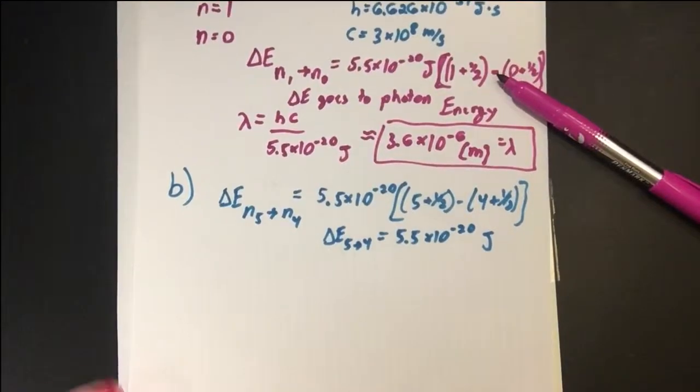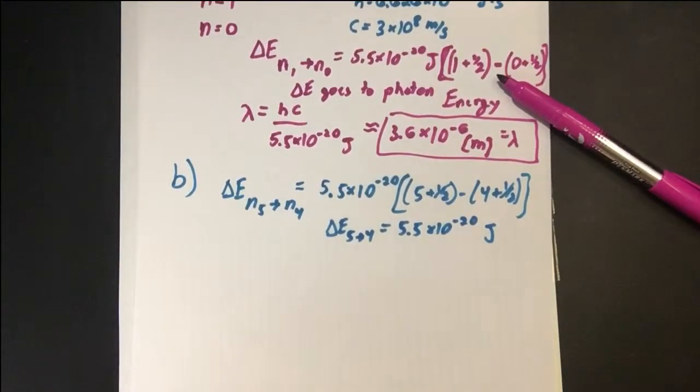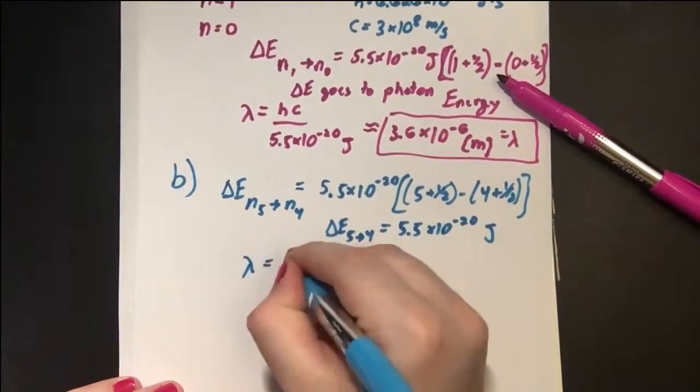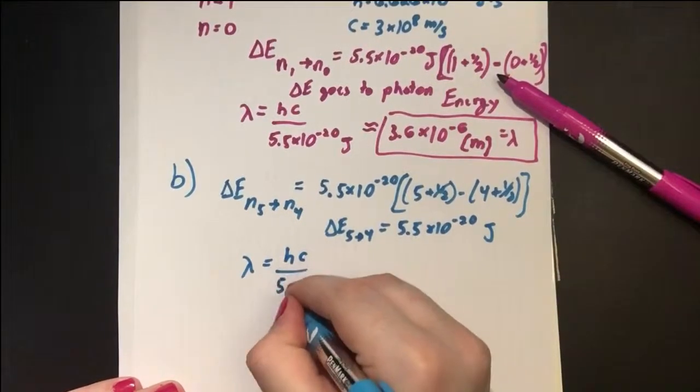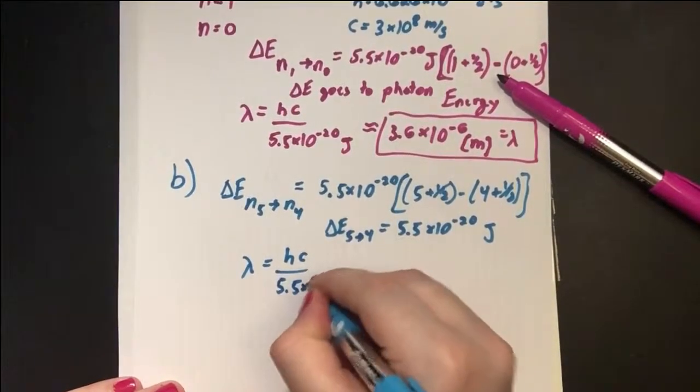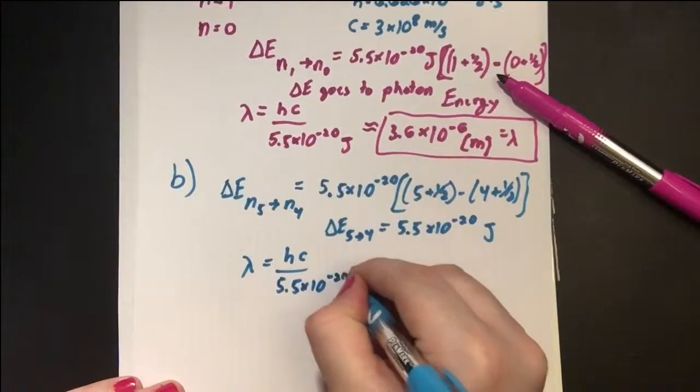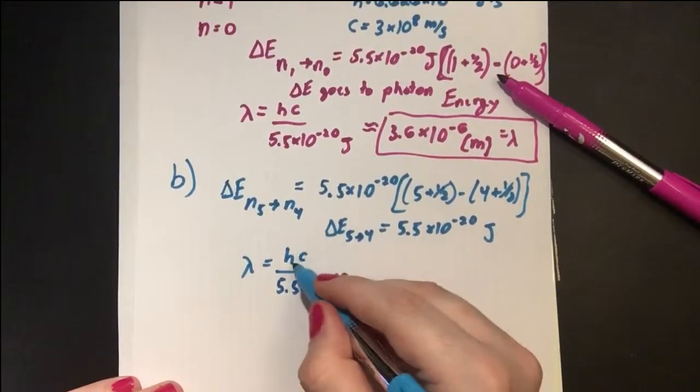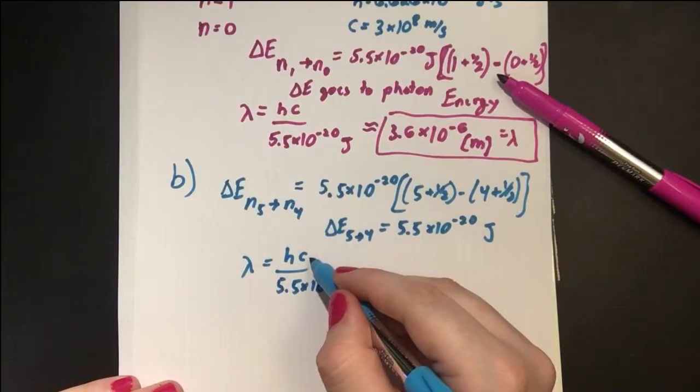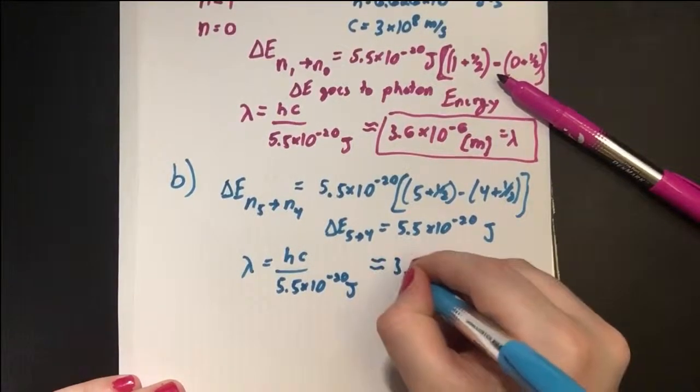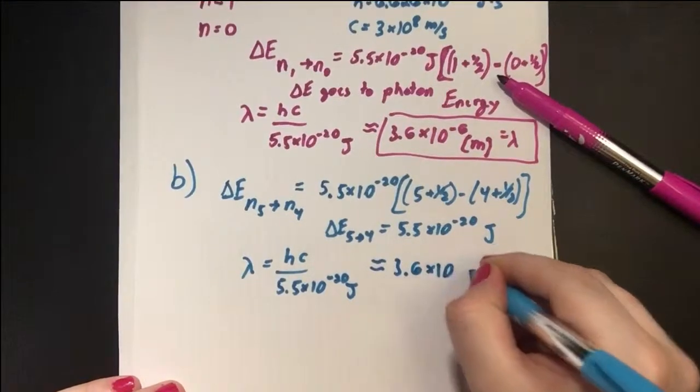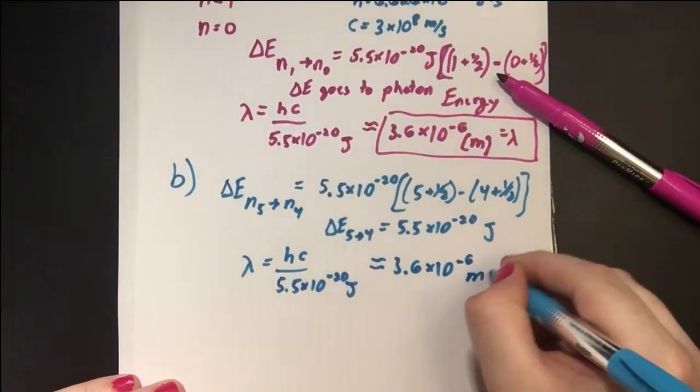Using this wonderful result, we can see that the wavelength has to be the same as it was in part A because our energy is the same. So if our energy is the same, we plug in the same h because it's a constant and c is a constant. So our λ is still approximately 3.6 × 10⁻⁶ meters.